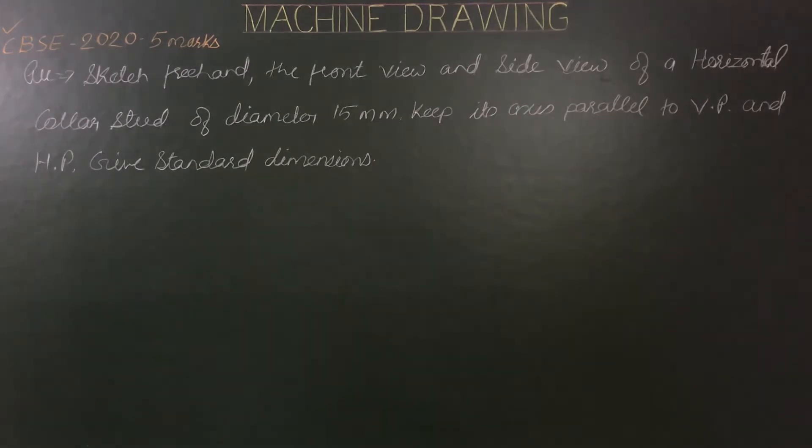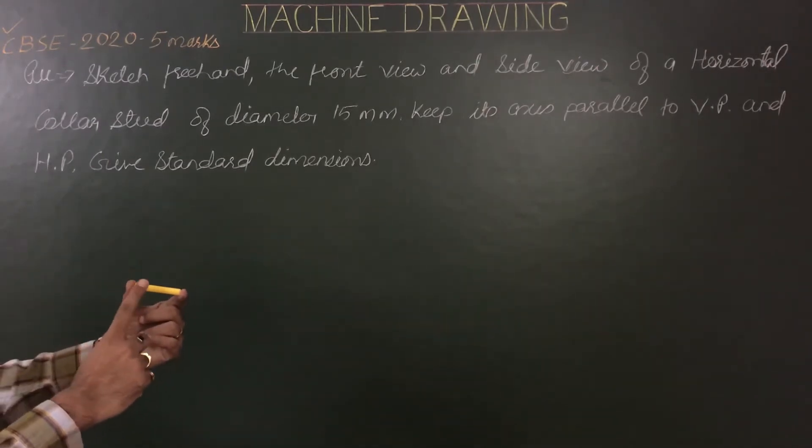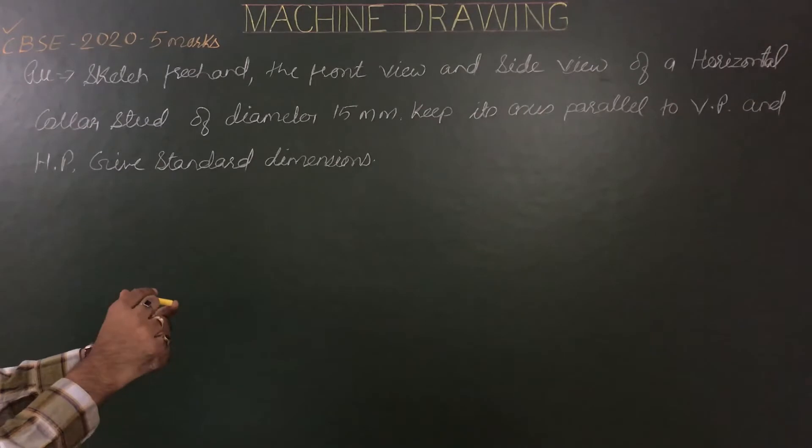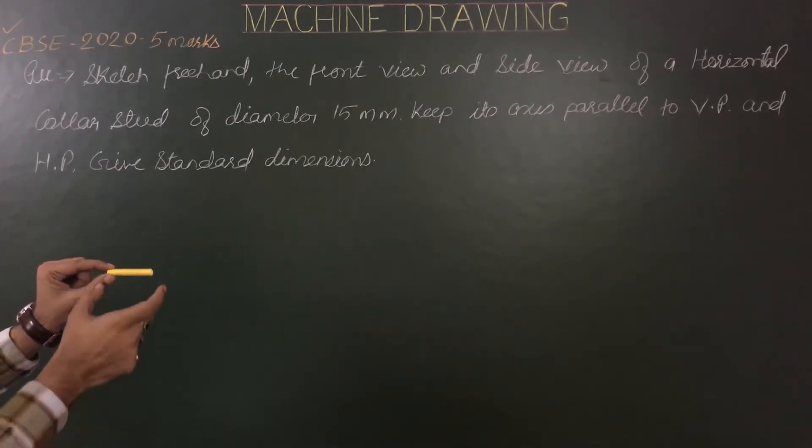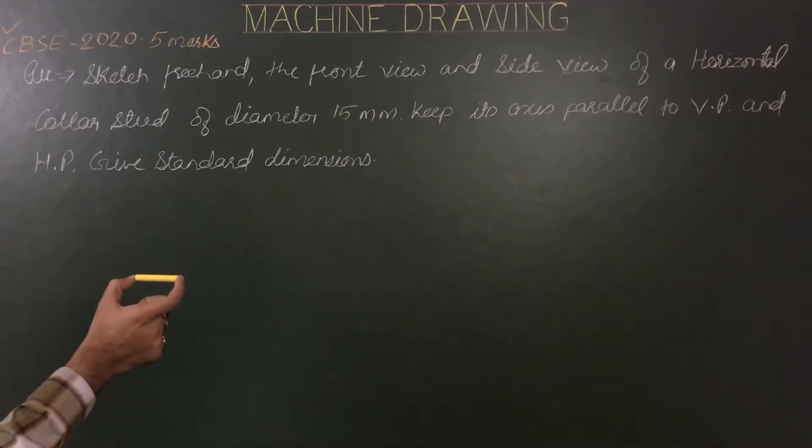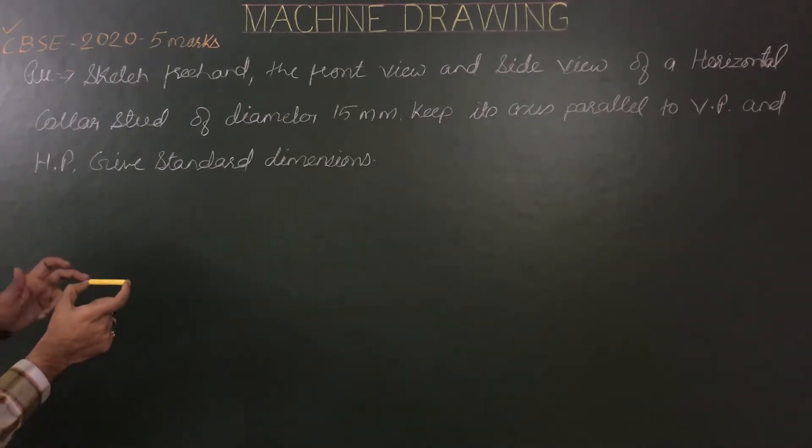So the axis of the stud is parallel to VP and is horizontal. Horizontal means the same is also parallel to HP. So this will be the final position. In this position, axis of the stud is parallel to both VP and HP.